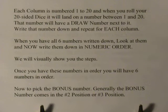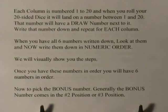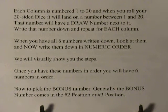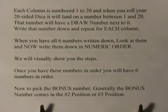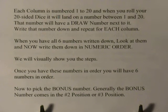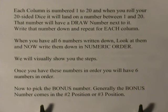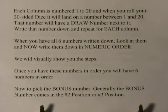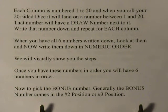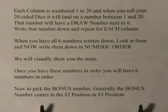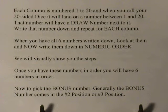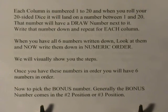Each column is numbered one to twenty, which is why we use 20-sided dice. When you roll your 20-sided dice it will land on a number between one and twenty, and that number will have a play number next to it. Write down that play number and repeat for each column or position. When you have six numbers written down, arrange them in numerical order and transfer them to the play slip.